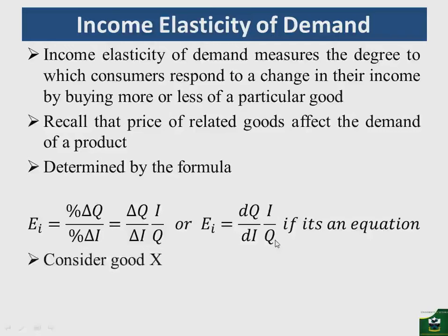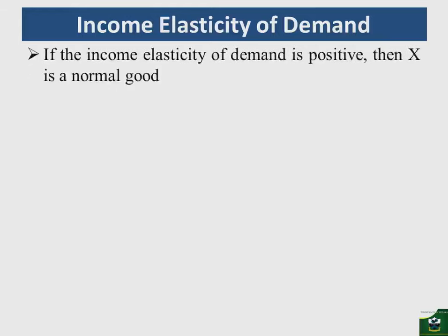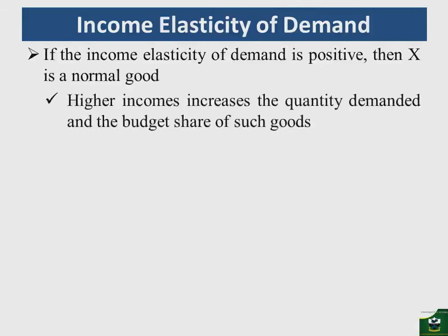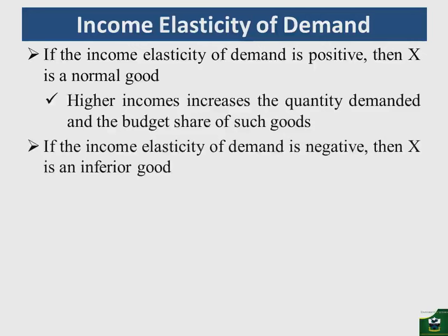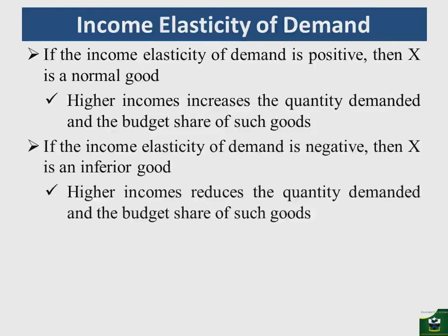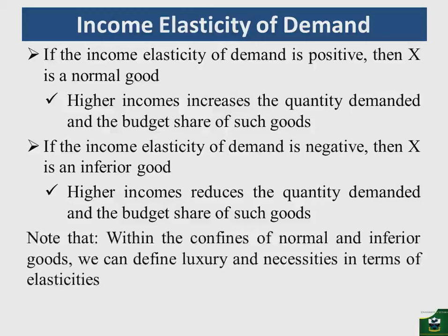If the income elasticity of demand for commodity X is positive, then X is a normal good — higher incomes increase the quantity demanded and the budget share of such goods. If the income elasticity of demand is negative, then X is an inferior good — higher incomes reduce the quantity demanded and the budget share. When consumers increase their income, they reduce the weight of inferior goods in their budget.